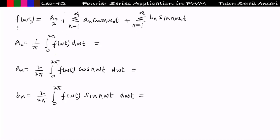The Fourier series expression f(ωt) is equal to a₀/2 — this is the DC value — plus the AC value, which is the summation from n=1 to infinity of aₙ cos(nω₀t), plus summation from n=1 to infinity of bₙ sin(nω₀t). These two are the AC components and the first term is the DC component. So any periodic function can be represented as the sum or series of sine and cosine waves having different harmonics.